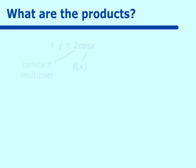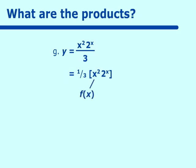We do not have to use product rule on 2 cosine x. On the last problem, x squared times 2 to the x over 3: one-third is factored out as the constant multiplier, leaving x squared times 2 to the x. Then x squared becomes f of x and 2 to the x becomes g of x. Now that we have looked at the different types of products, we need to learn how to do product rule.